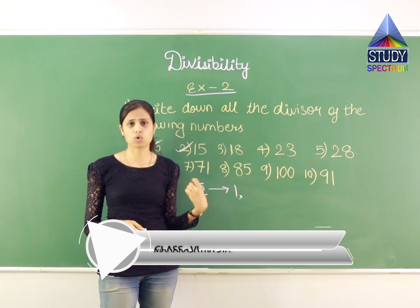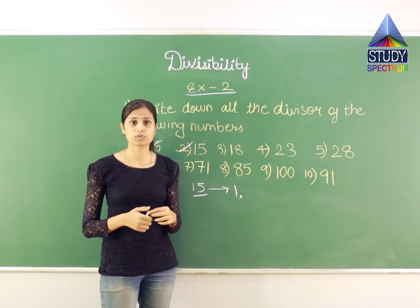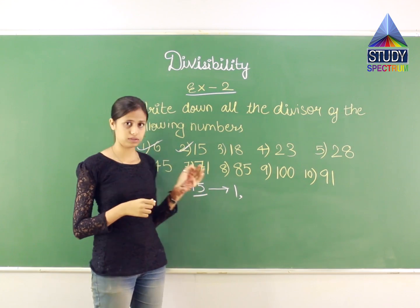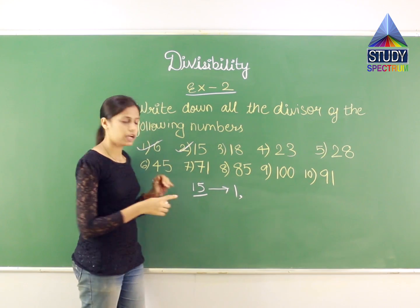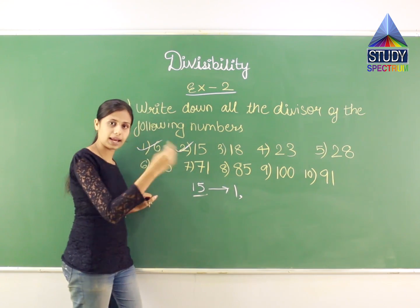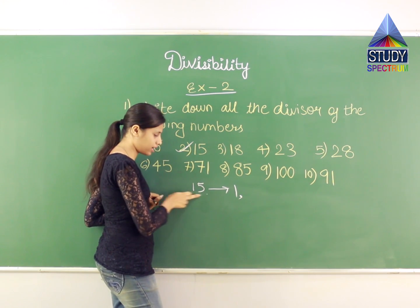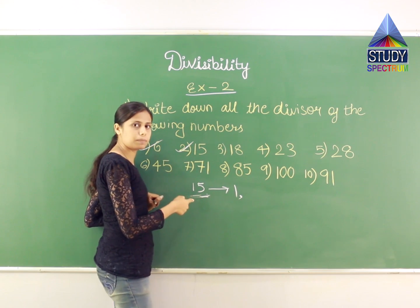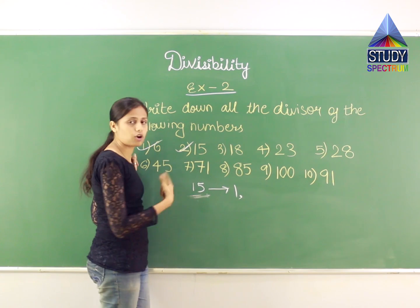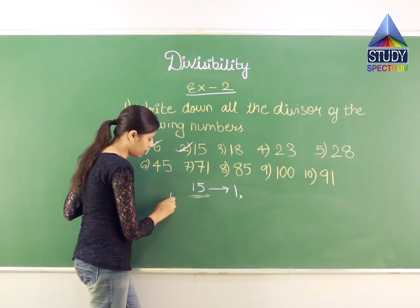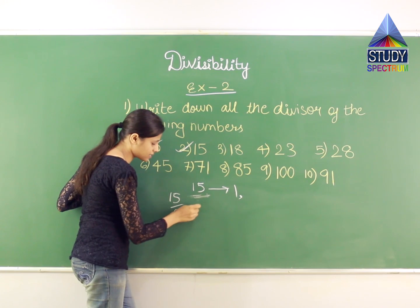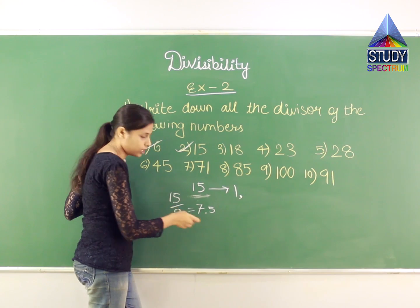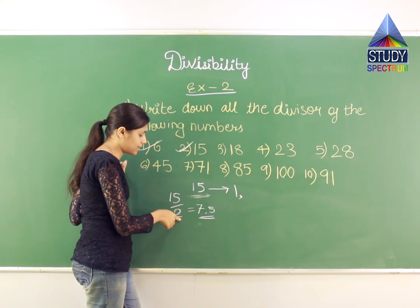Can 2 be a divisor? By dividing 15 by 2, do I get a natural number? That's not possible, because for a number to be divided by 2, it should have an even number at the end. Is 5 an even number? No. So 15 cannot be divided by 2. If I divide 15 by 2, I will get 7.5, which is not a natural number.